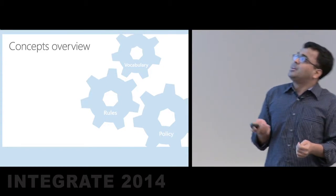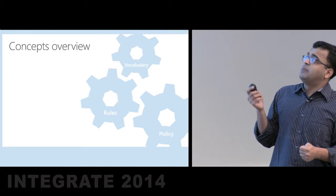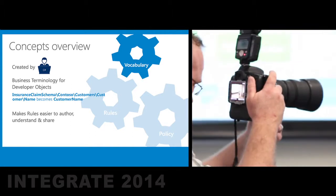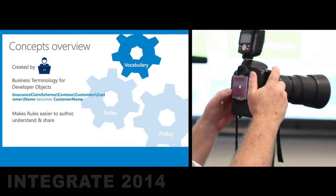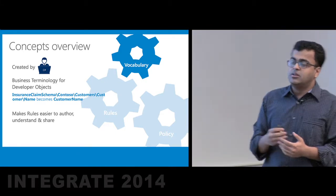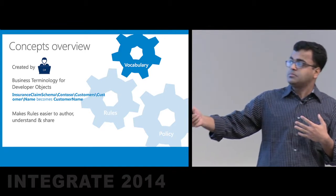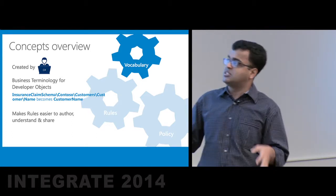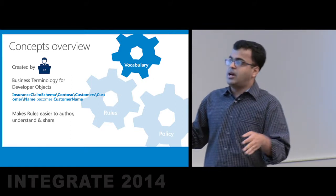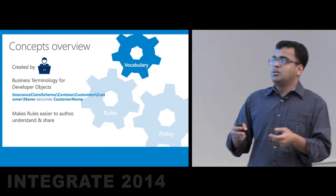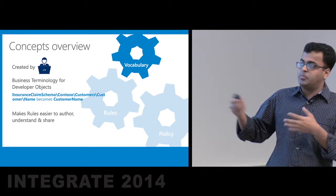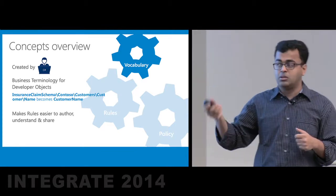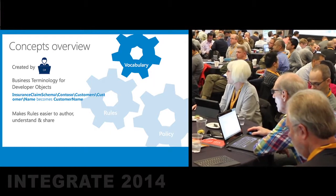Let's do a quick concepts overview. There are three main concepts: vocabulary, rules, and policy. A vocabulary is created by developers and represents business terminologies for developer objects. For instance, a really complex XML XPath like a full insurance claim schema path gets wrapped into something simple like 'customer name.' That makes it much simpler for the business analyst to use in subsequent rules. Using vocabulary makes rules easier to author, easier to understand, and shareable across multiple policies.